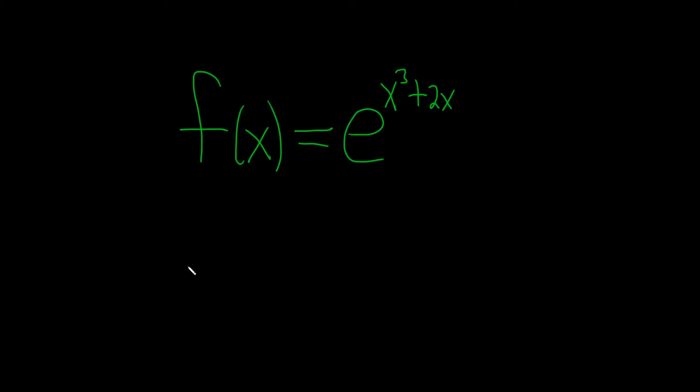In this problem, we're going to find the derivative of this function. So the derivative of e to the x is e to the x. But here it's e, and then we have something besides x.